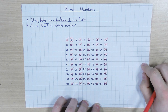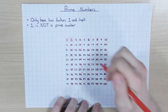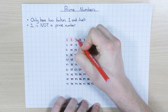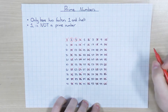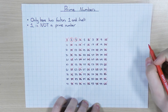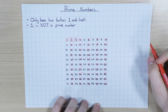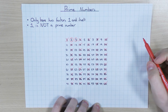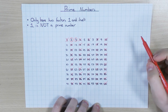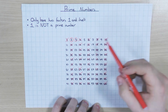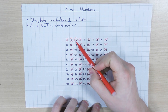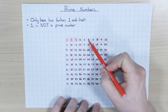Next one to have a look at is 3. Now again, 3 is prime. It's only got two factors, 1 and 3, so 3 is prime. So what I'm going to do now is get rid of all the numbers that are in the 3 times table, because obviously 3 will be a factor. Well, 6 is already gone.